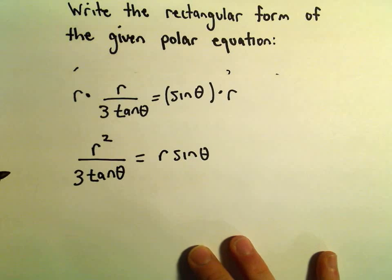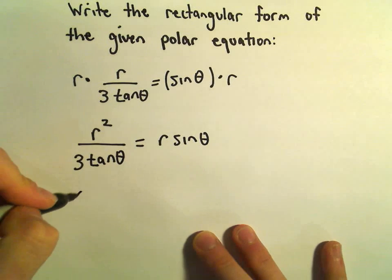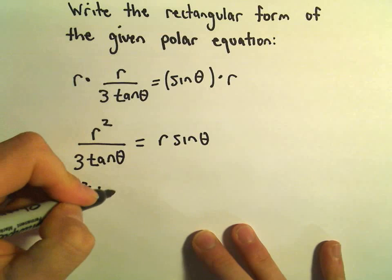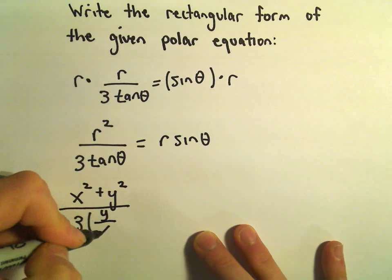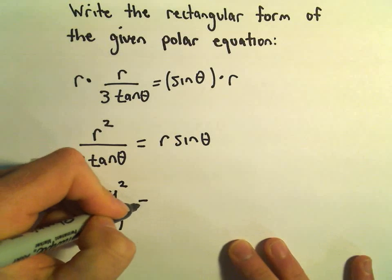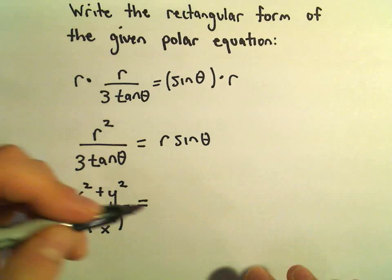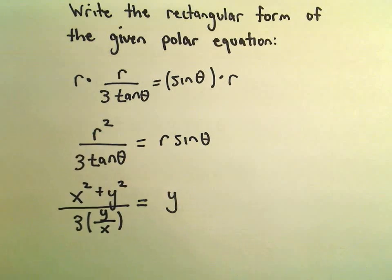Now we can start substituting. So r² is x² + y². We've got 3 times tangent, which is y/x. r·sin(θ), that's the same thing as y.